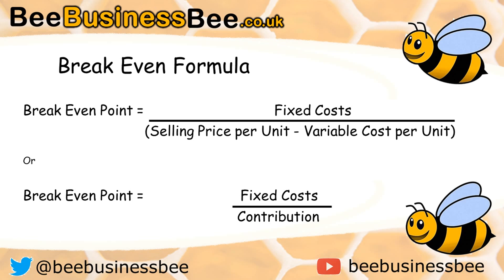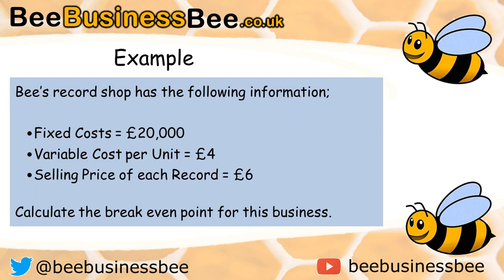Both forms of the formula are correct and you may see either expressed. Now let's look at an example. Beach Records shop has the following information: fixed costs of £20,000, variable costs of £4, and a selling price per record of £6. You need to calculate the break-even point for the business. Pause the video now and see if you can work it out.